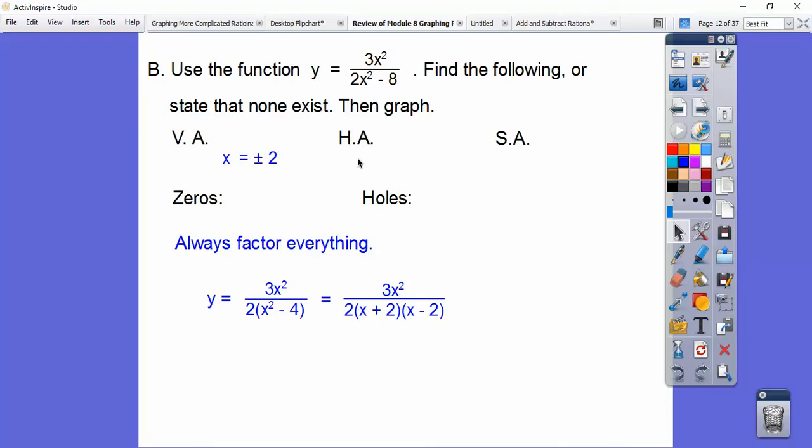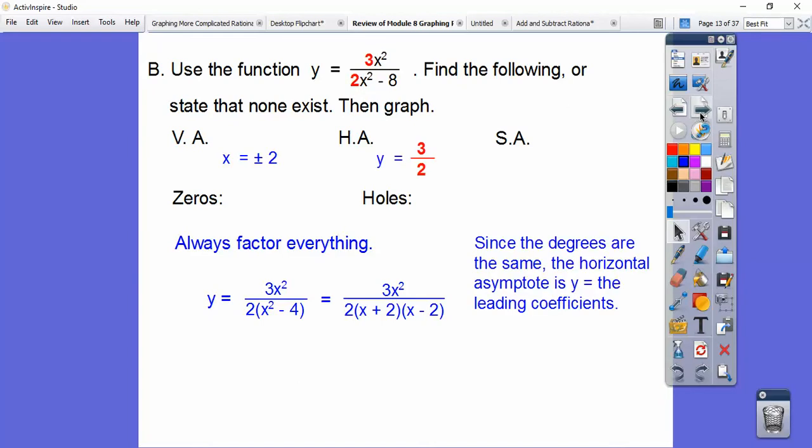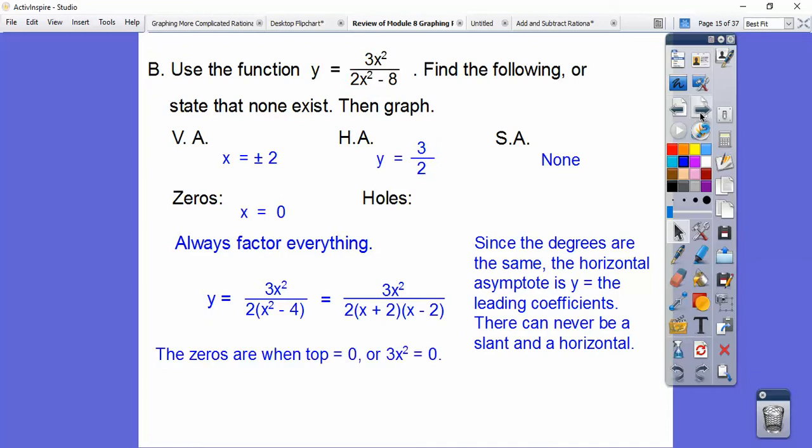Horizontal asymptotes, there is a horizontal asymptote, the degrees are the same. So our horizontal asymptote is y equals 3 halves, our leading coefficients right there. So that's our horizontal asymptote, which means there's no slant asymptote. And the zeros are when we set the top equal to 0. So we just set 3x squared equal to 0, or x has to be 0. And there's no holes because no factors cancel out.